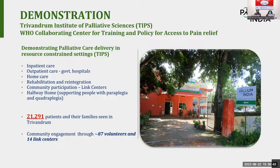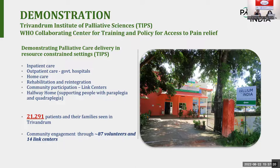This continues for a period of time until the link center becomes self-sustaining. When we feel they are sustainable enough to run a palliative care center independently, we retract our support and they deliver palliative care themselves. Right now we have 14 link centers around Trivandrum, with 87 volunteers working across these centers helping deliver palliative care in their area.